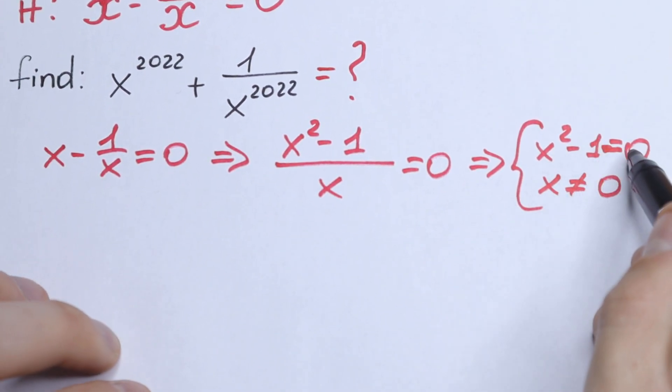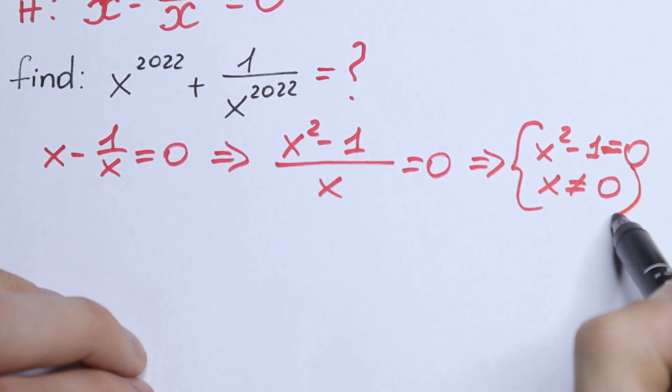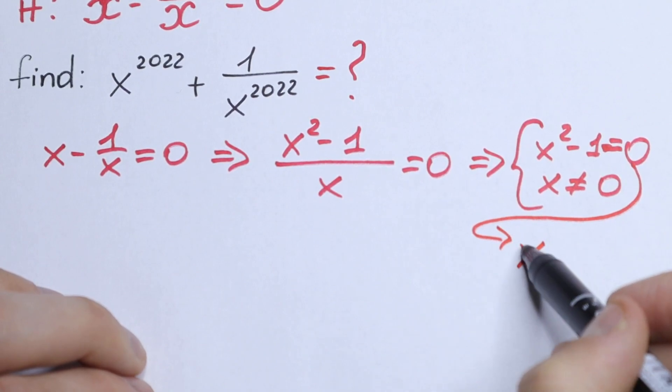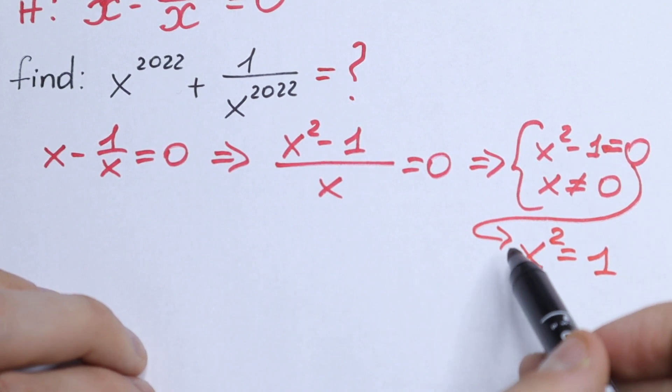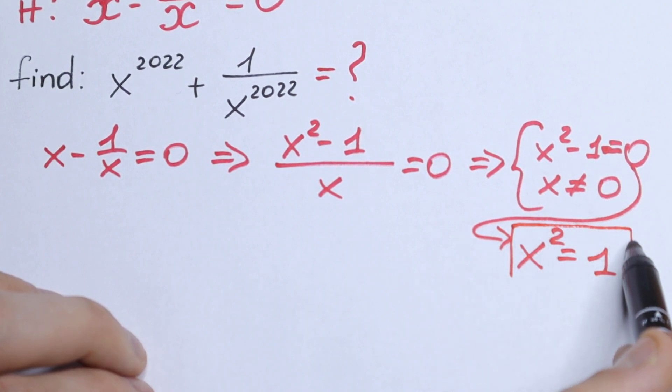So from here, x squared minus 1 equal to 0, and we can write that x squared equal to 1. Because if we bring minus 1 on the right, we will have that x squared equal to 1.